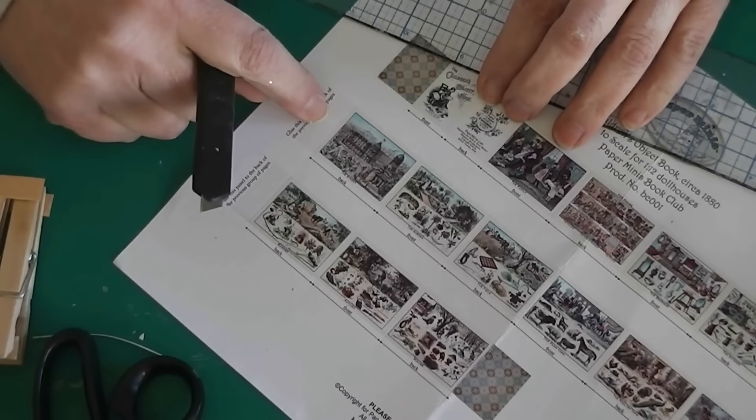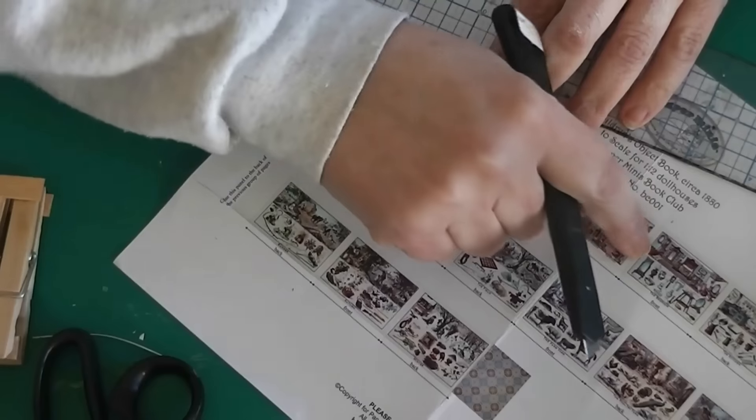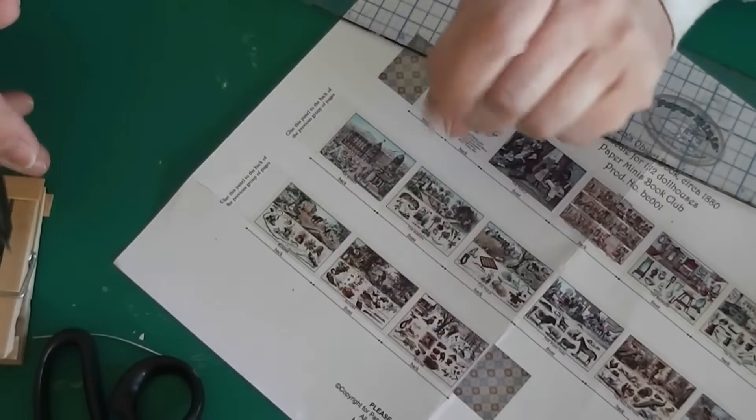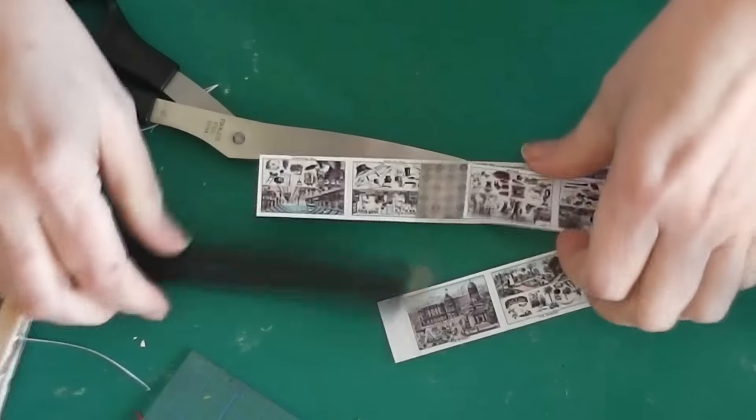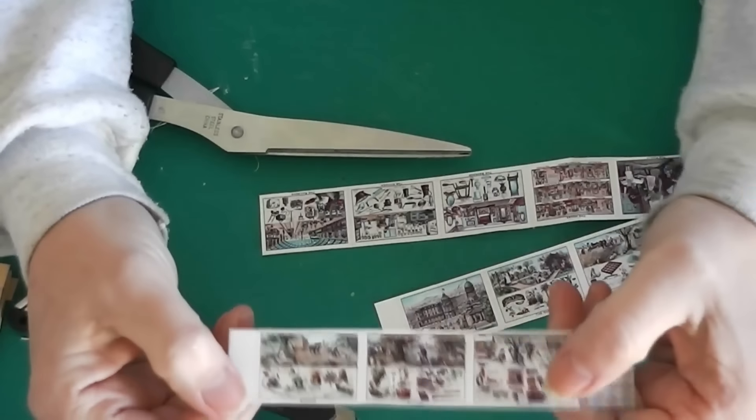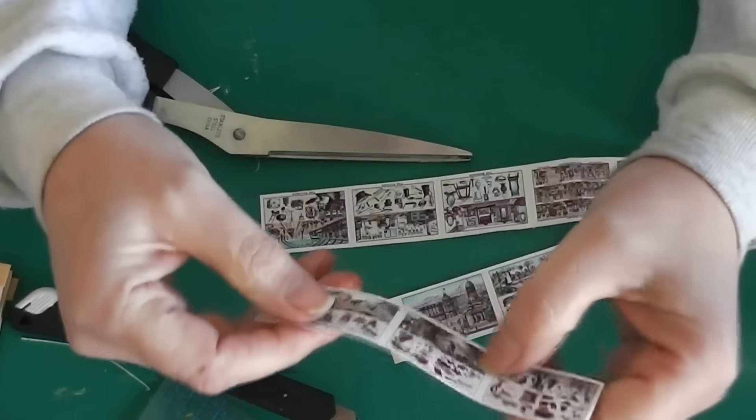I'm going to follow that line. When you're cutting, be sure to leave, there's a little tab right here and here. Be sure to leave that little tab because we will need those to connect this to this and this to this. So I'm going to cut these pages out.